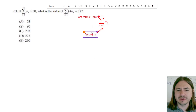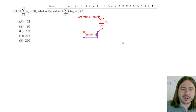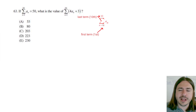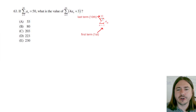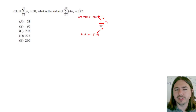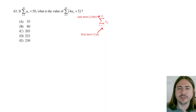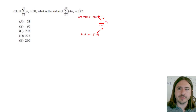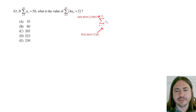Most of the time it'll start with n equals 1 or n equals 0, something like that, but it could start with anything. In this case it'd be the first, because we see a 1 here. So we get the first term, last term — we want to add up the first 10 terms of the sequence. And we don't know what the sequence is, but we know that the sum is 50.